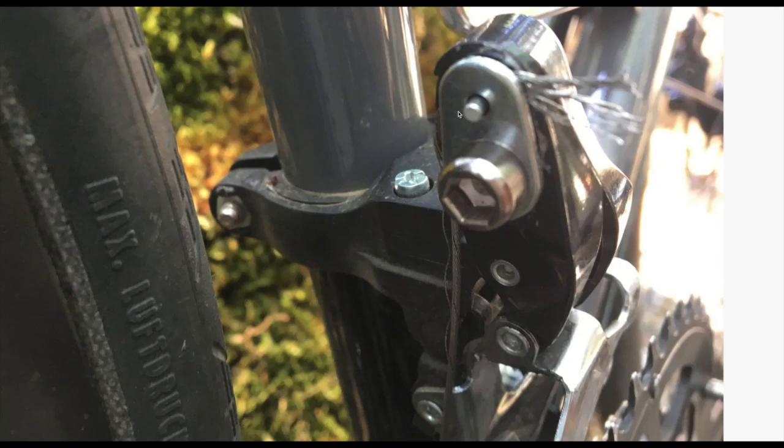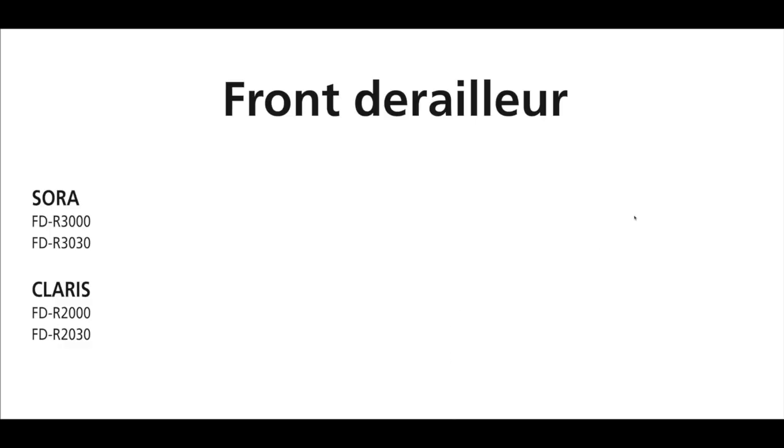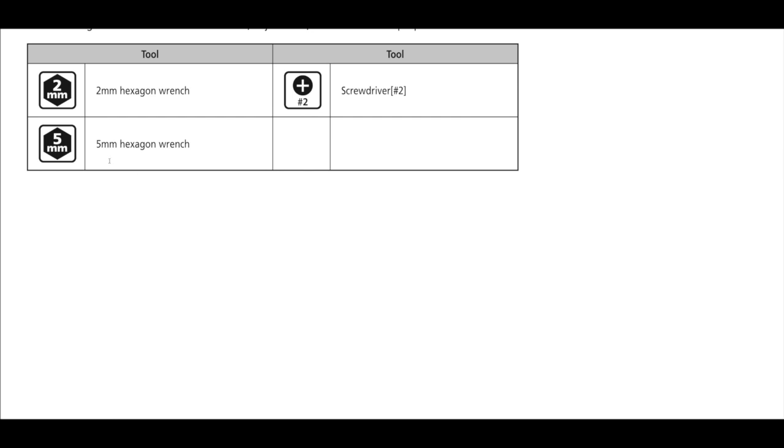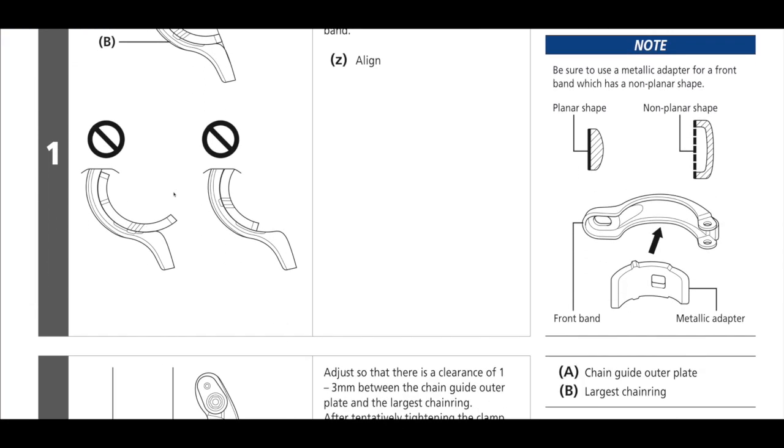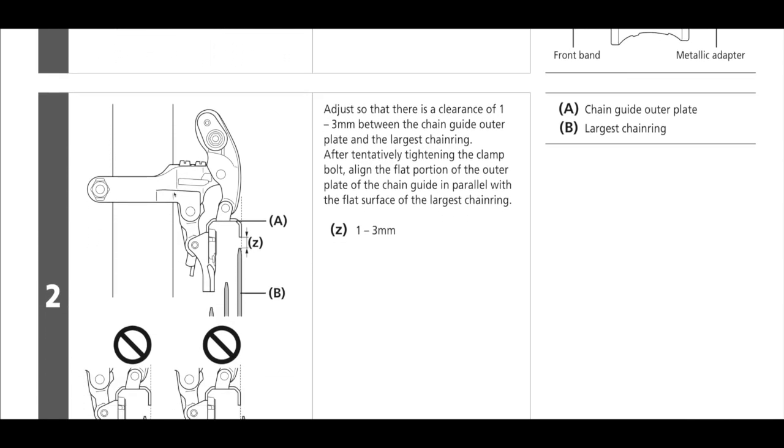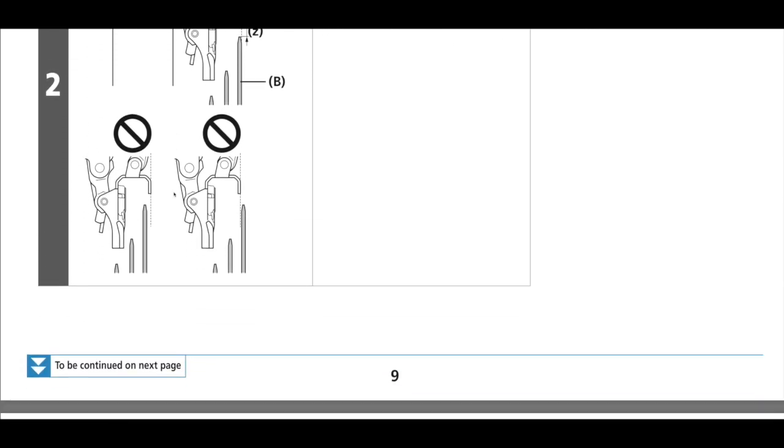I saw a question on the bike forums about a Sora front derailleur that was having some slipping issues. This is actually an issue I've seen quite a few times - even bike mechanics sometimes struggle with trying to figure this particular derailleur out.